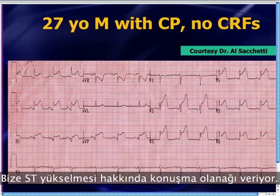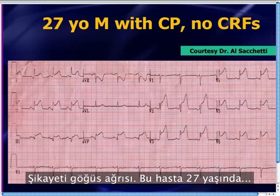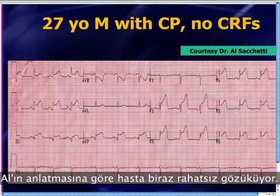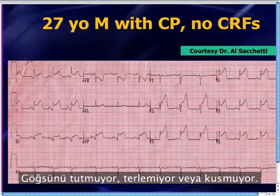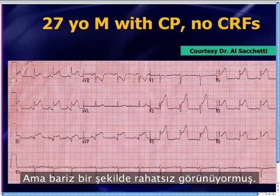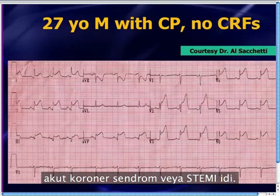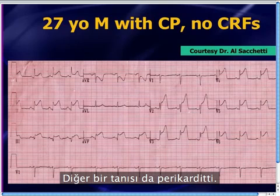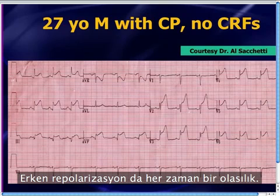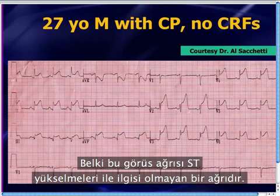This fantastic case gives us an opportunity to talk about ST segment elevation. It's a 27-year-old male brought in with chest pain and no cardiac risk factors. The patient looked somewhat uncomfortable but wasn't clutching his chest or vomiting — not a textbook presentation. The two main concerns were acute coronary syndrome or STEMI given the diffuse ST segment elevation, and pericarditis. Benign early repolarization was also a possibility.